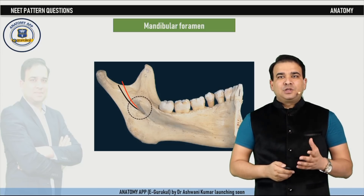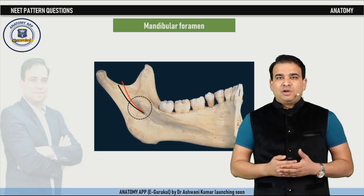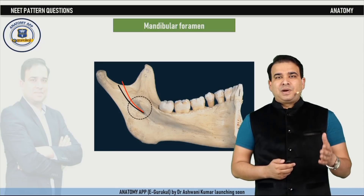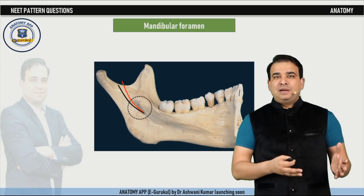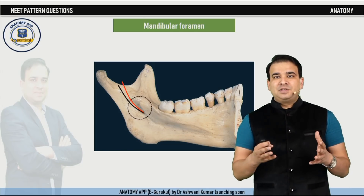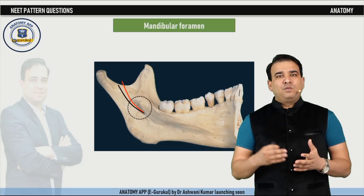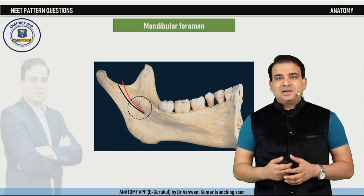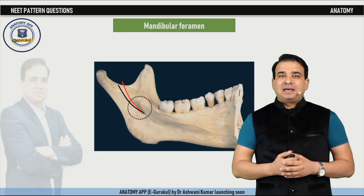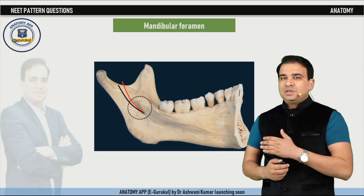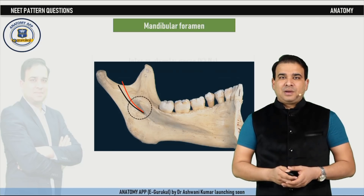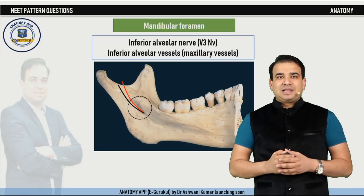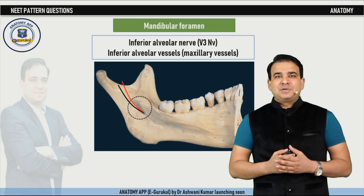The nerves and vessels entering through this foramen are the inferior alveolar nerve and inferior alveolar vessels. The inferior alveolar nerve is a branch of the posterior division of the mandibular nerve. The mandibular nerve's posterior division has three branches: auriculotemporal, lingual, and inferior alveolar. The inferior alveolar vessels are branches of the first part of the maxillary artery. All of these enter through the mandibular foramen and come out through the mental foramen.